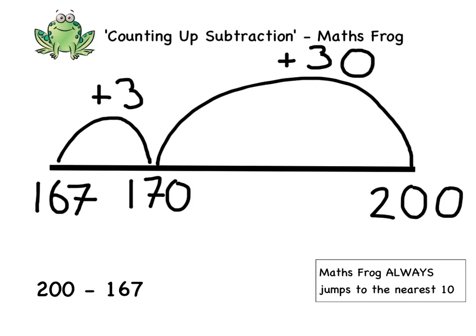Now we need to add these two numbers together: 30 and 3. 30 add 3 equals 33. So that gives us the answer to our subtraction: 200 take away 167 equals 33.